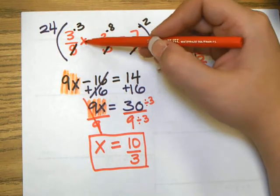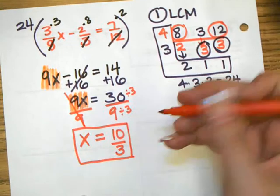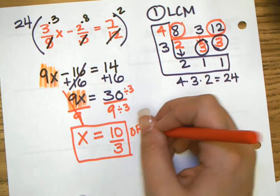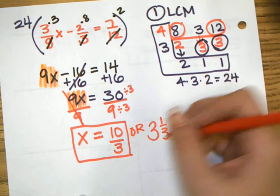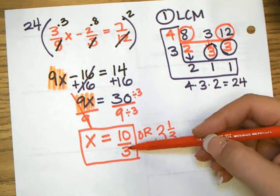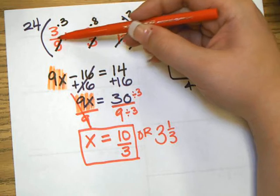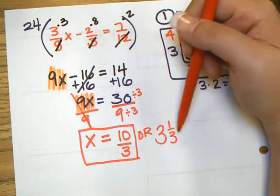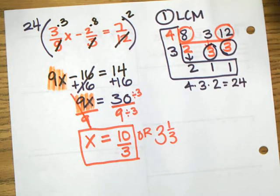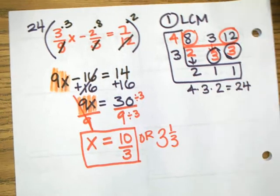Remember, you do not need to write it as a mixed number because if we plug it in for x, we can't multiply with mixed numbers. So it's not wrong to put 3 and 1/3, but it's pointless because your goal is to figure out what x is, and when you multiply with x, you can't multiply with mixed numbers.